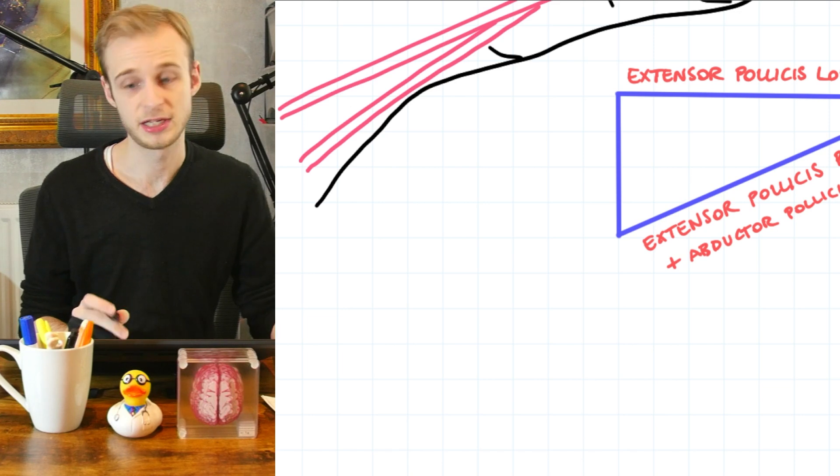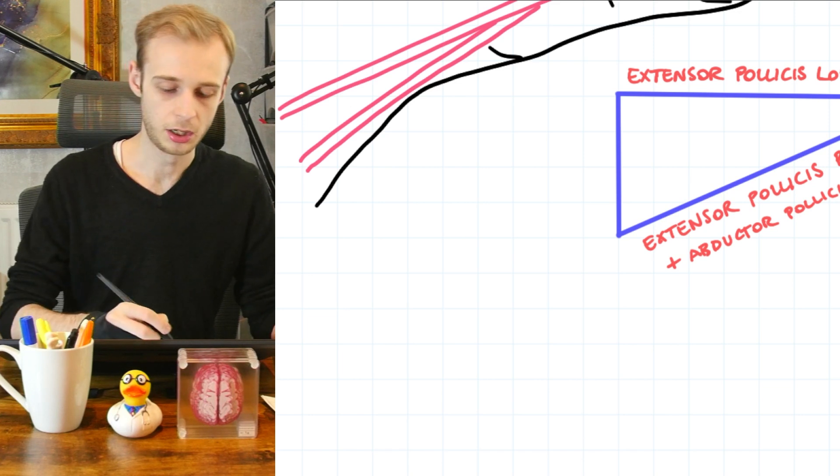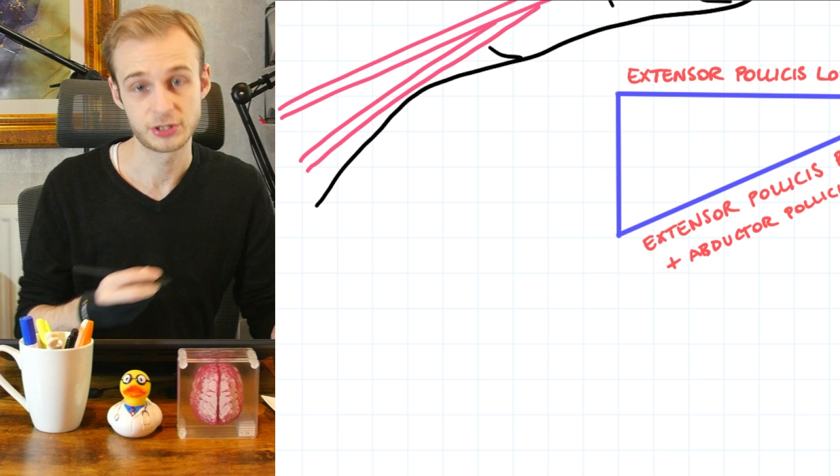Now we only have one more border to think about, this proximal border of our triangle. And it's actually a bony feature.